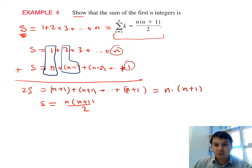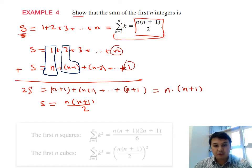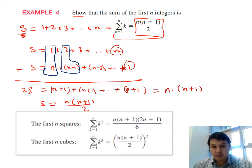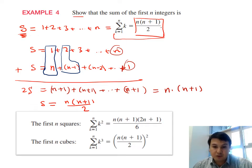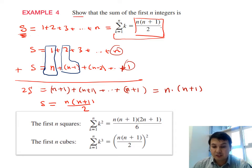That's the formula for summing the first n integers. There are other formulas: the sum of k² from 1 to n equals n(n+1)(2n+1)/6, and the sum of k³ from 1 to n equals [n(n+1)/2]². Interested students can try to prove these using mathematical induction as a good exercise.